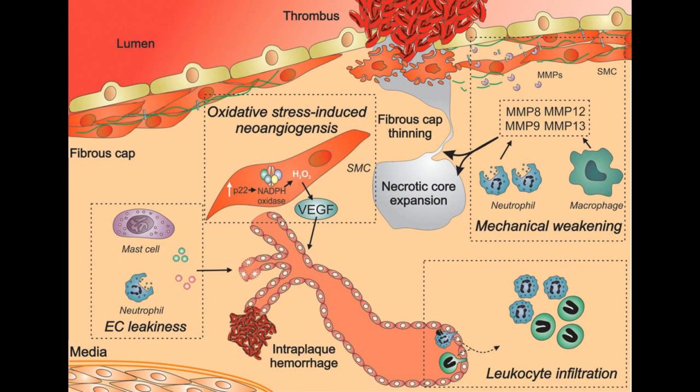New blood vessels formed on the lateral sides of the lesions create an intraplaque hemorrhage. This intraplaque hemorrhage leads to rapid enlargement of the plaque, which blocks the entire lumen of the artery.